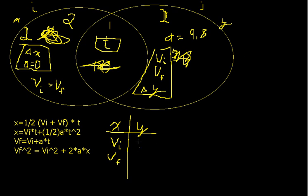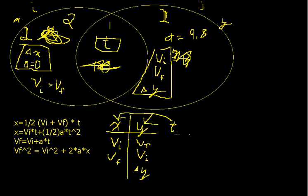So what you're always going to do is list off which variables you have, then solve for t — because that's the only thing that goes into both x and y. You're going to find t, and then you're going to do that generally on the x side.